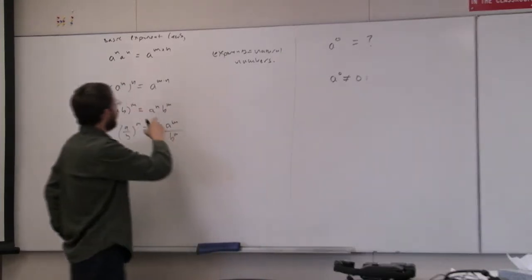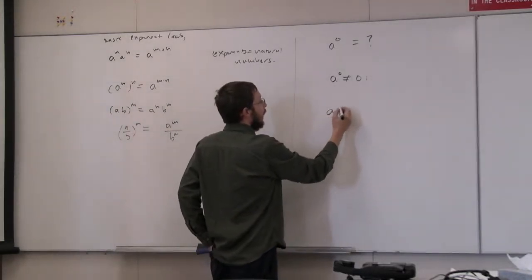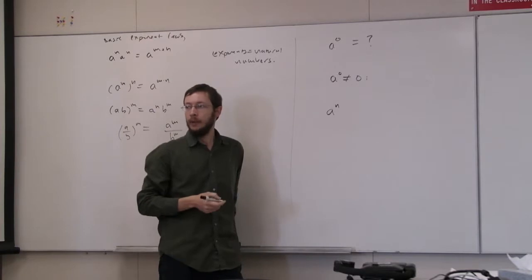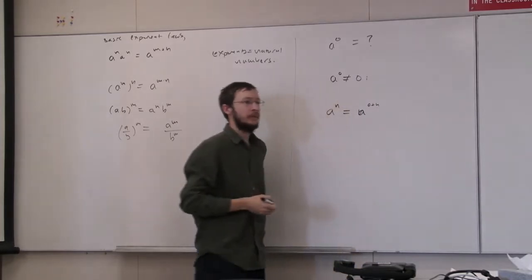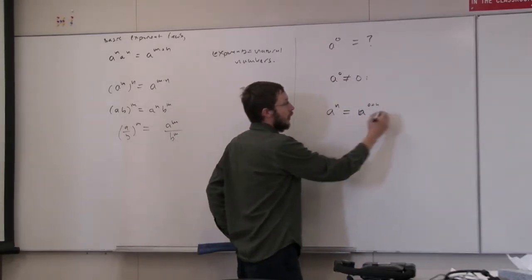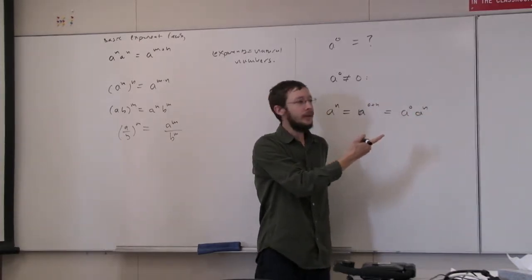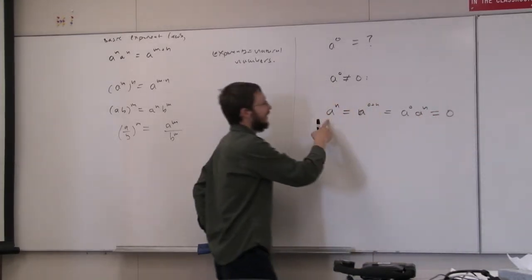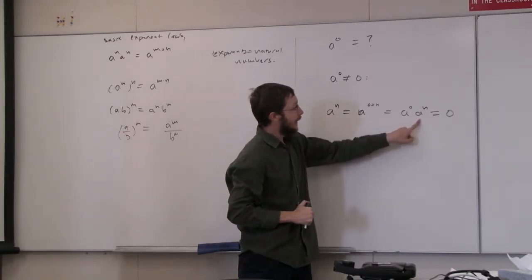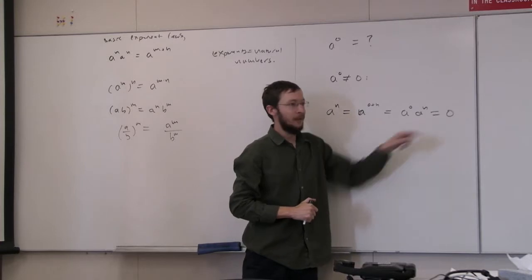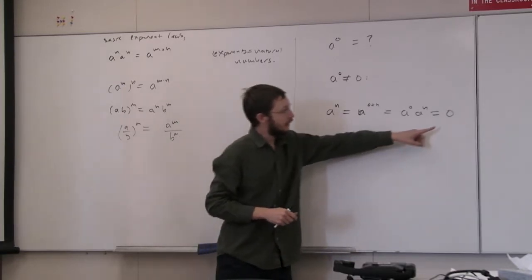Suppose that a to the zero is zero, and suppose that the first exponent law holds. Then a to the n, where n is any natural number, can certainly be thought of as a to the zero plus n. If that exponent law holds, then we get a to the zero times a to the n. Now if a to the zero really is zero, then every number would be equal to zero, because a to the n would be zero times a to the n, which is zero. Since we know non-zero numbers exist, that's a contradiction.